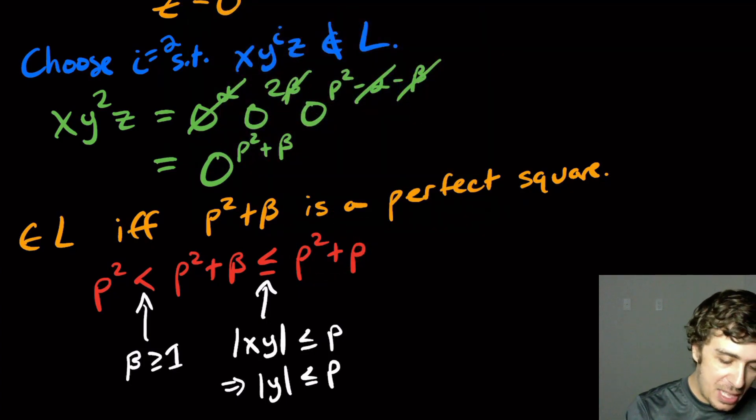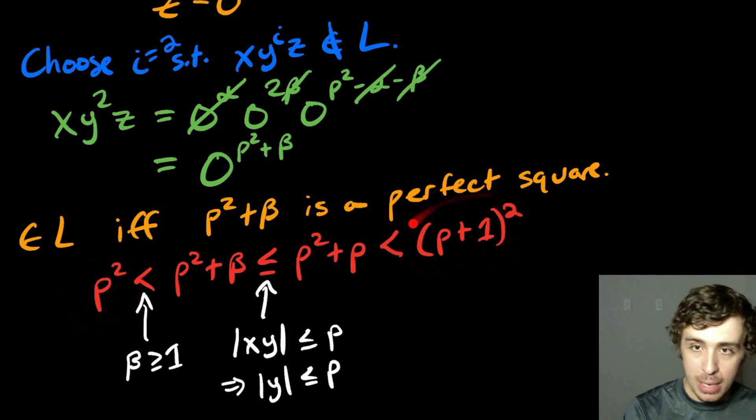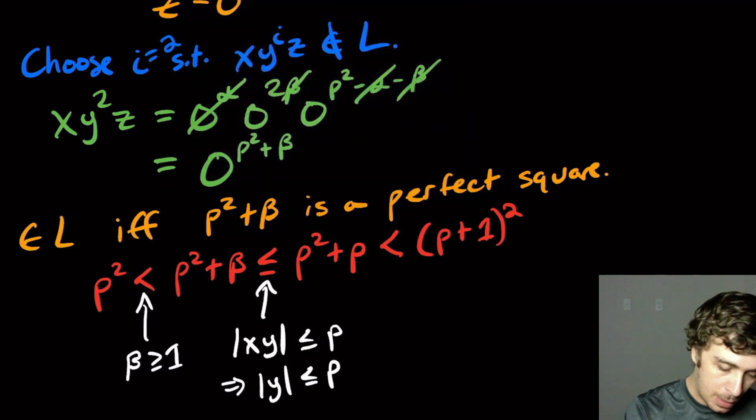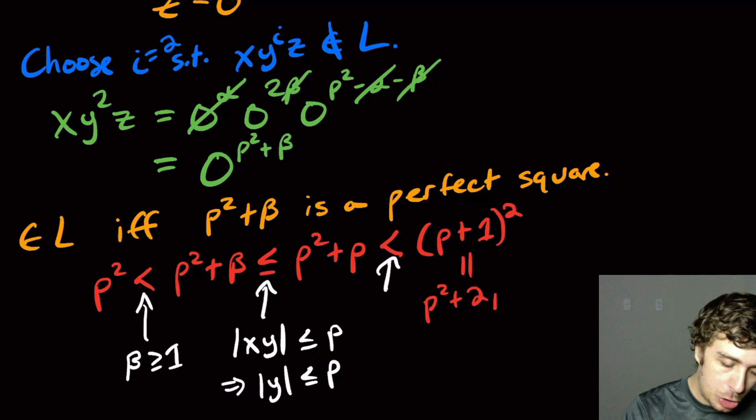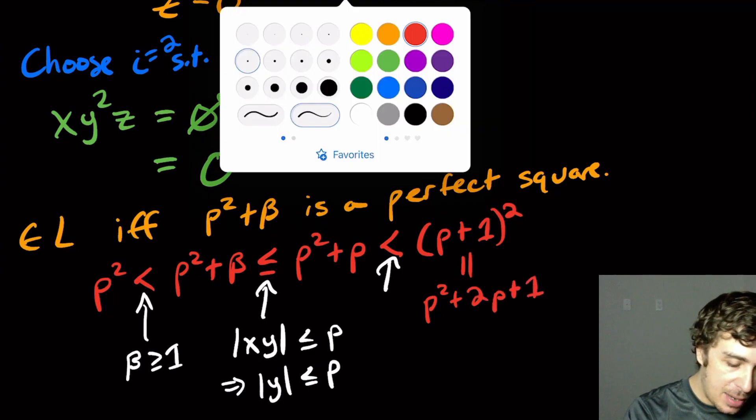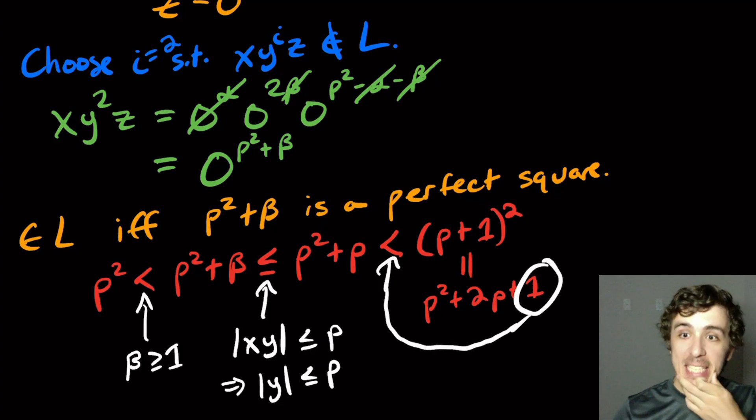But I actually claim that this is strictly less than the next perfect square upward after p squared. So this is a perfect square. This is clearly a perfect square. And I claim that there's a strict inequality there. And how do I know that? Well, let's see. So this right-hand side is equal to p squared plus two p plus one. And the reason it's a strict inequality is because of that.